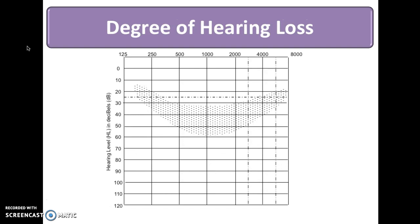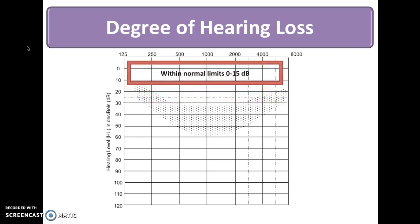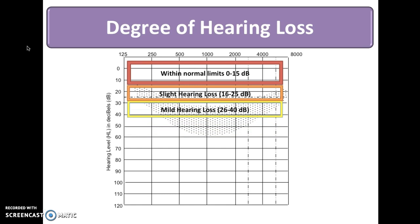Let's review the varying degrees of hearing and hearing loss. If your thresholds, which are the softest sounds that you can hear, fall between 0 and 15 dB, we say your hearing is within normal limits. If your air conduction thresholds fall between 16 and 25 dB, we say there is a slight hearing loss. If your right and left ear air conduction thresholds fall between 26 and 40 dB, we say there is a mild hearing loss.